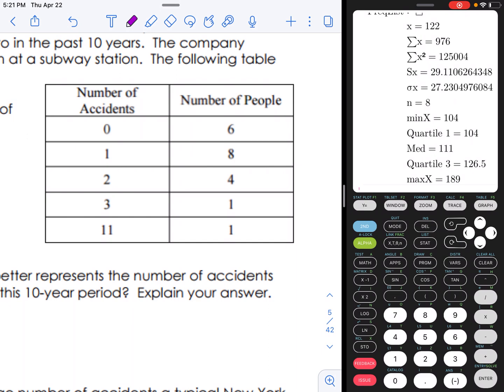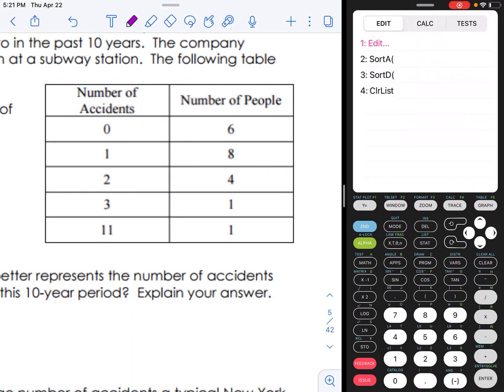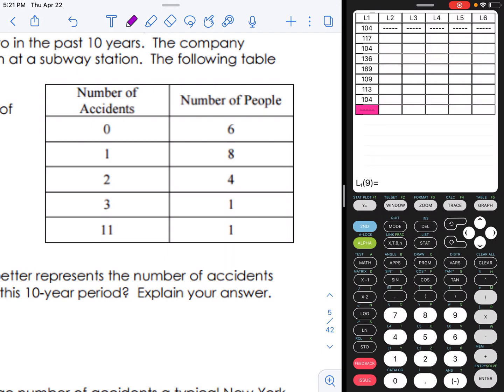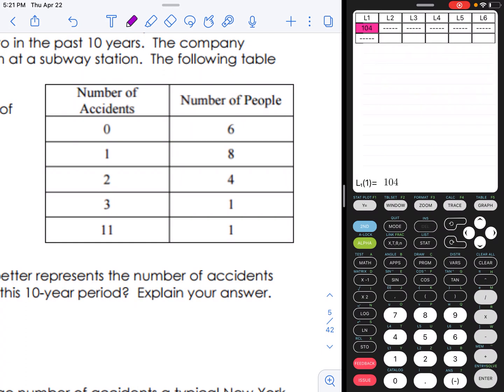So I'm going to go to my stat button, I'm going to hit edit, and I'm going to hit the delete button to clear out all of those numbers. And in L1, I'm going to use the left column of the table. So I'm going to type in 0, 1, 2, 3, and 11.